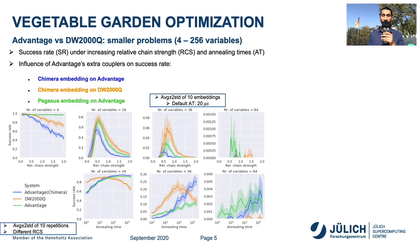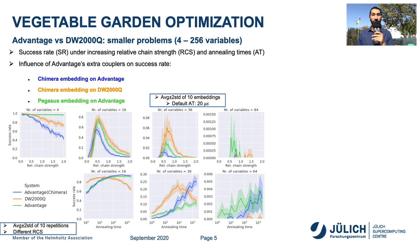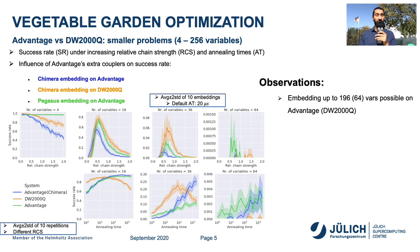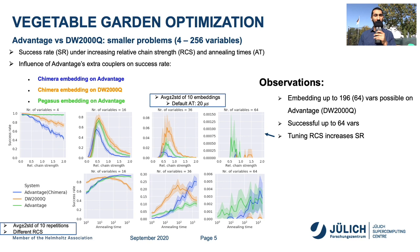The top charts show on the y-axis the success rate and on the x-axis the relative chain strength, for blue curves which refer to Chimera embedding on Advantage, the orange ones which refer to D-Wave 2000Q, and the green ones which refer to Advantage. The bottom plots show the success rate on the y-axis and the annealing time on the x-axis. The observations we make are: embeddings with up to 196 or 64 variables are possible on Advantage or D-Wave 2000Q, and the runs are successful for up to 64 variables. Tuning the relative chain strength and annealing times increases the success rate, especially on Advantage.